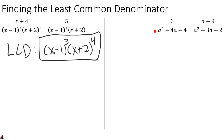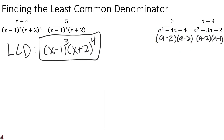For our second example we use the same strategy, but notice that our denominators are not yet factored. So we need to start by factoring. a squared minus 4a minus 4 factors into (a minus 2) times (a minus 2), and a squared minus 3a plus 2 factors into (a minus 2) times (a minus 1). It will be easier to view (a minus 2) times (a minus 2) as (a minus 2) squared.